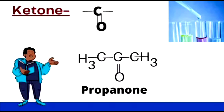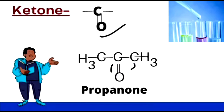The next group is the ketone group, which has a C double bond O (C=O) group. Here is a propane compound where the ketone group is attached between two methyl groups, and the new compound formed is called propanone.